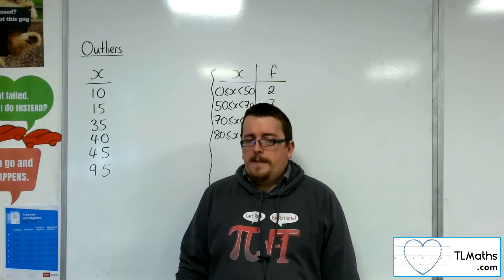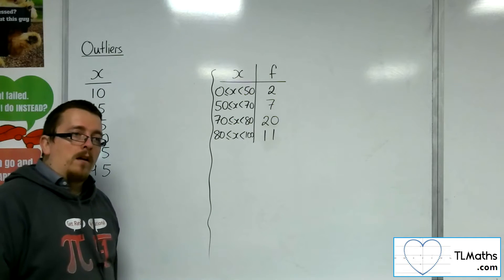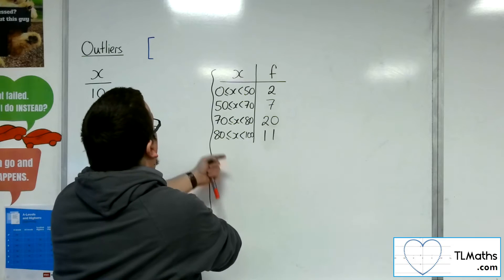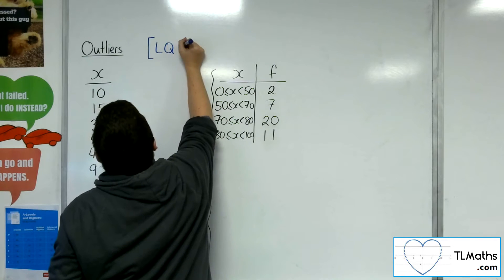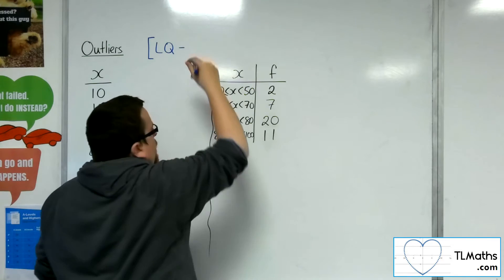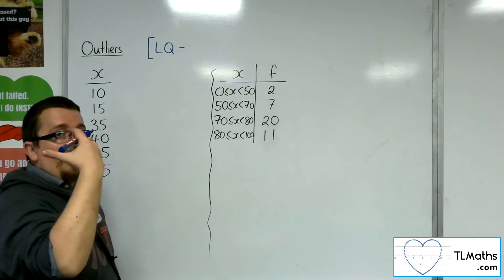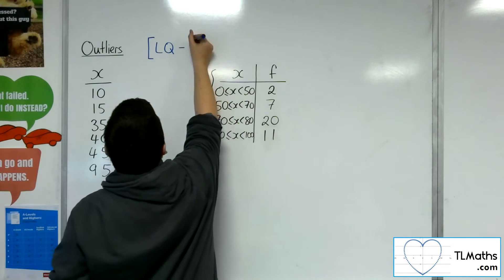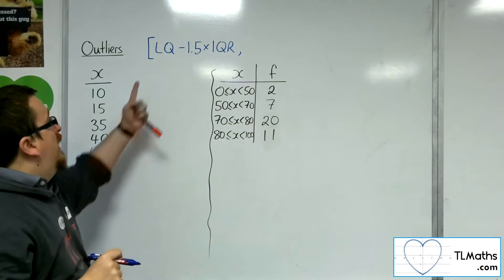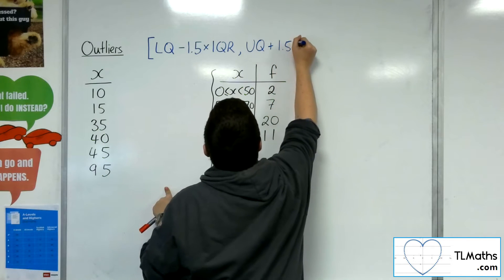For the quartiles, the way it is calculated to determine if a data item is an outlier is by looking at the range of values between the lower quartile take away some multiple of the interquartile range. In the majority of cases, we use 1.5 times the interquartile range. So the lower bound is the lower quartile take away 1.5 times the IQR, and the upper bound is the upper quartile plus 1.5 times the IQR.